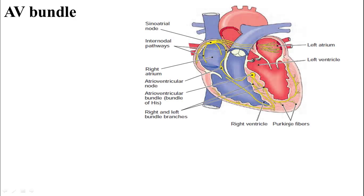AV bundle is a component of the cardiac conduction system — the conduction system of the heart. The conduction pathway begins at the sinoatrial node. 'Sino' means sinus, and 'atrial' means pertaining to the atrium. The sinoatrial node is the natural pacemaker of the heart; it produces the heart rhythm.